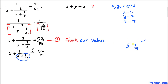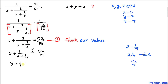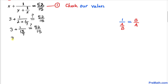Let's focus on the inner fraction. We have 2 as a whole number and 1 over 7 as a fraction. Merging them as a mixed number: 2 times 7 is 14, plus 1 is 15, divided by 7. So this part becomes 15 over 7. Now we can write: 1 divided by (3 plus 1 divided by (15 divided by 7)). Simplifying further, 1 divided by (15 over 7) equals 7 over 15.